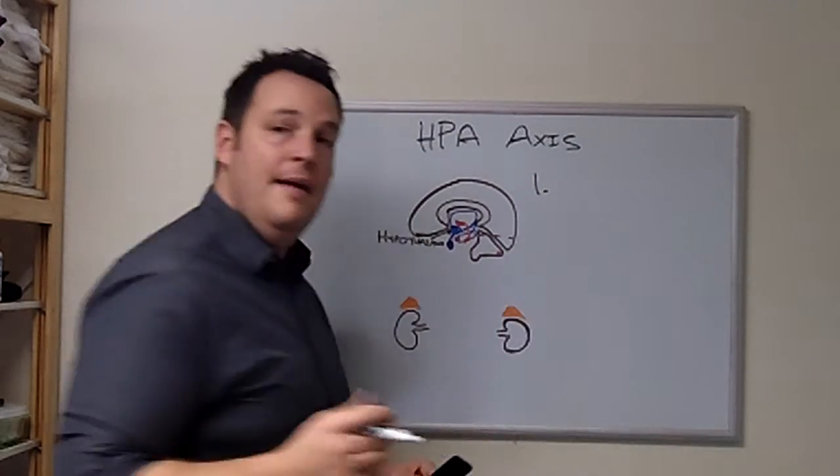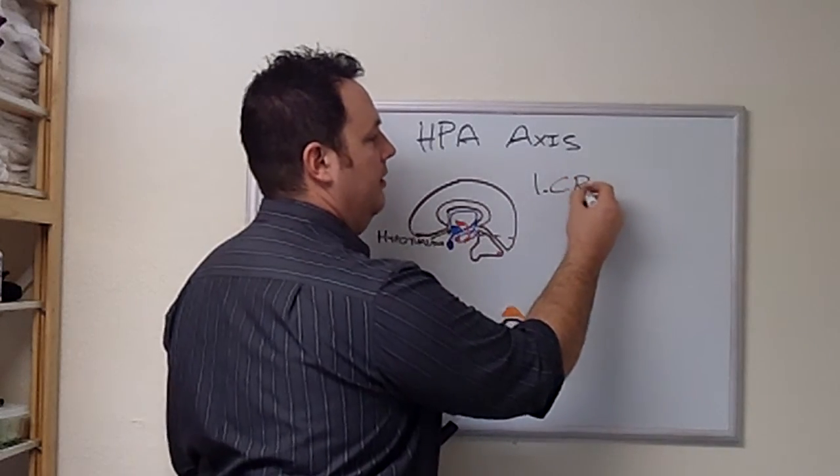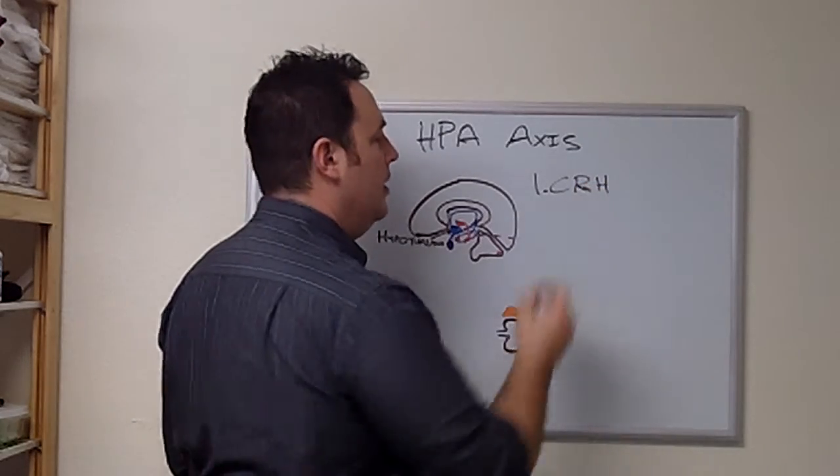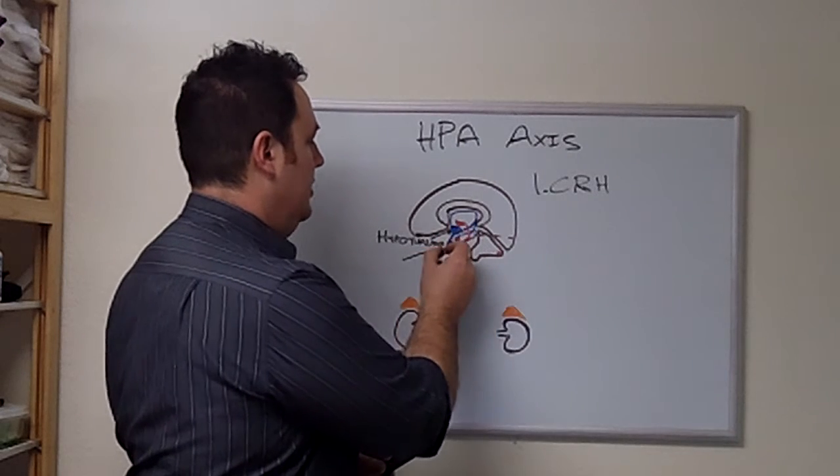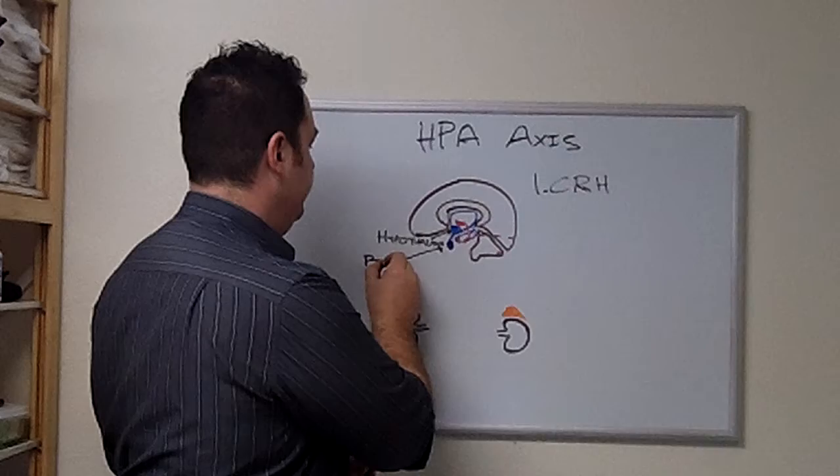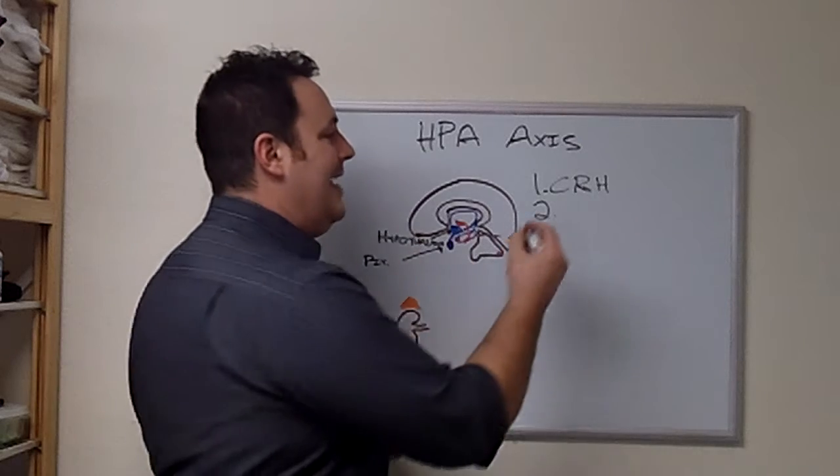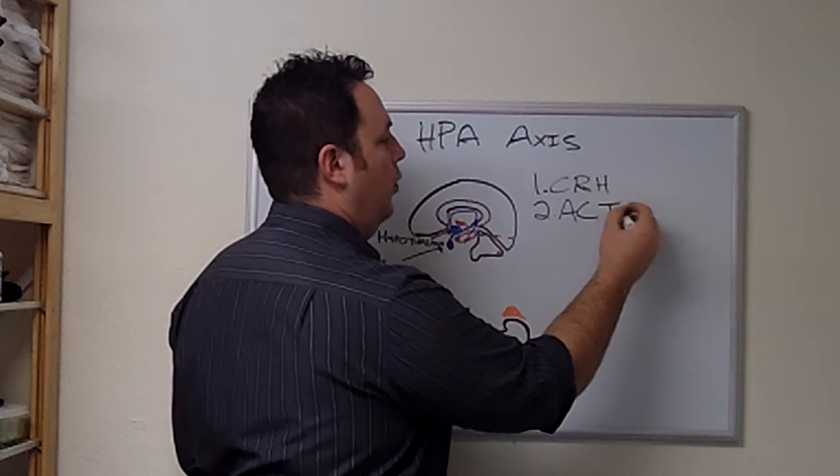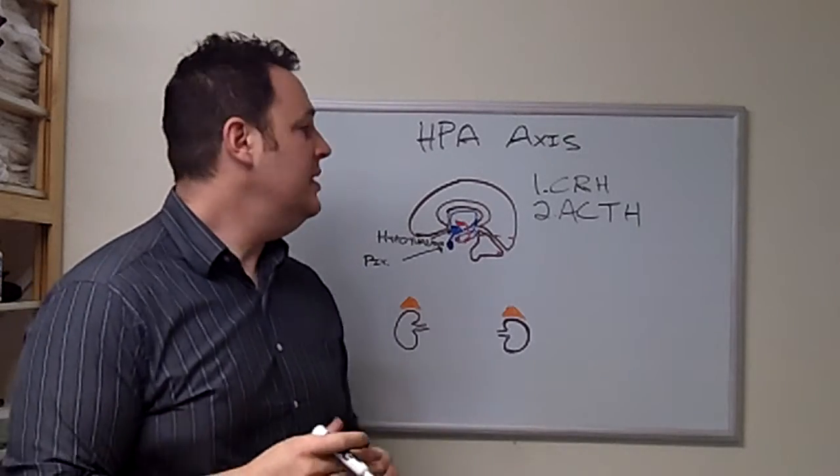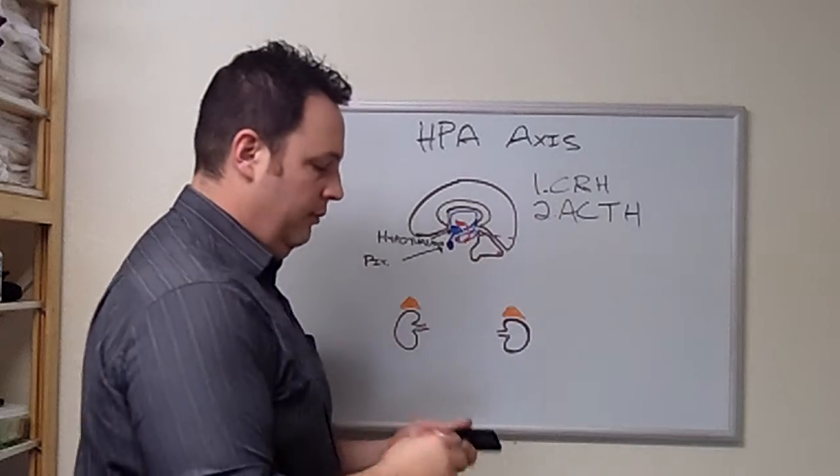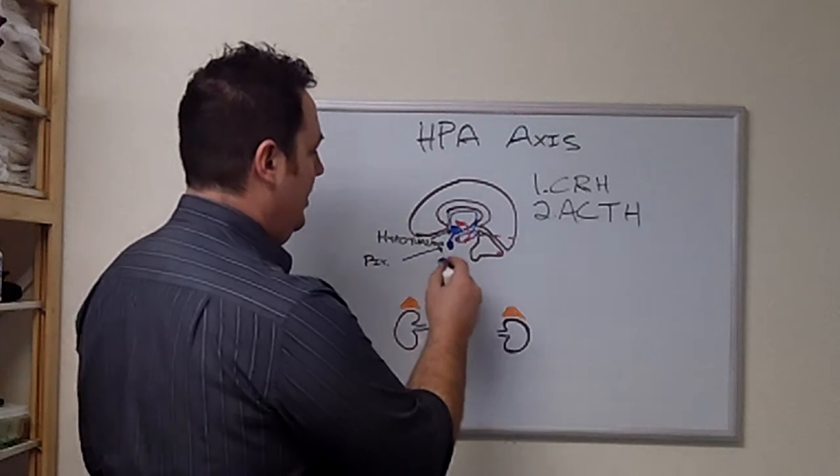The first step that has to happen here is the hypothalamus produces corticotrophic releasing hormone, or CRH. CRH now travels down this infundibular stalk to talk to the pituitary. What happens in the pituitary? The pituitary is stimulated to secrete ACTH, or adrenocorticotrophic releasing hormone. From the pituitary, now we have ACTH, and we're going to get stimulation of the adrenal glands.